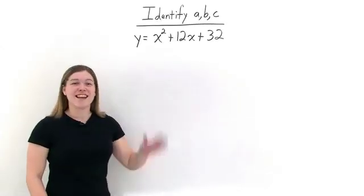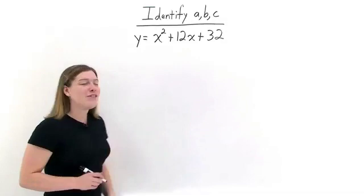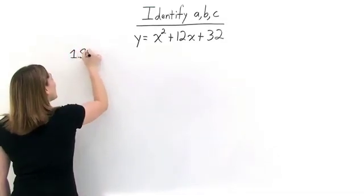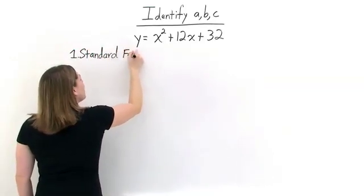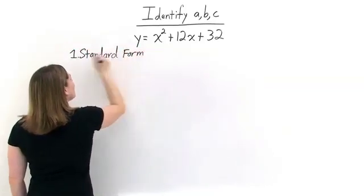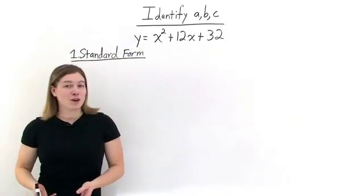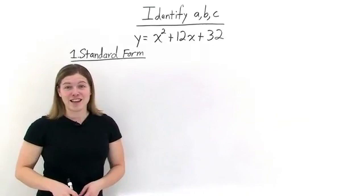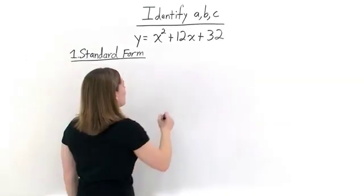Let's identify a, b, and c in this quadratic equation. Since we've been given a quadratic equation, it's a good idea in our first step to make sure that our equation is in the standard form for a quadratic equation. By putting our equation in standard form, it will make it a lot easier to identify a, b, and c. So let's look at that standard form for a quadratic equation.